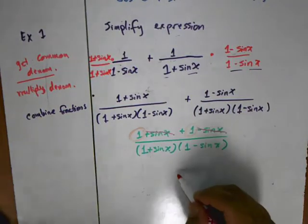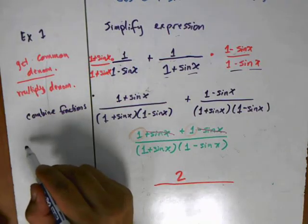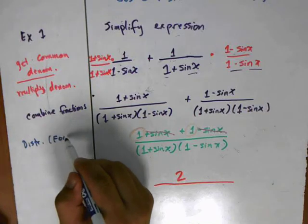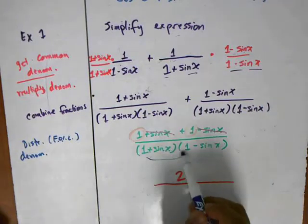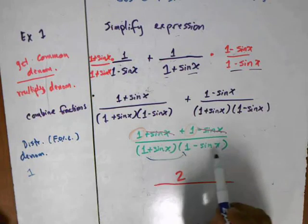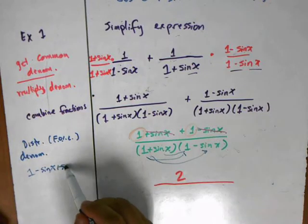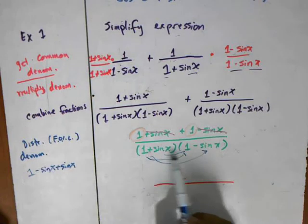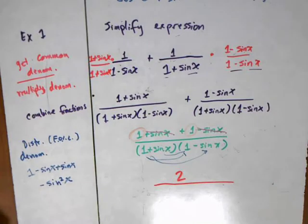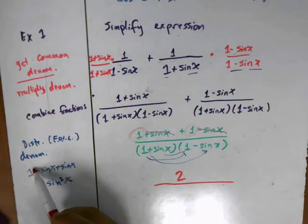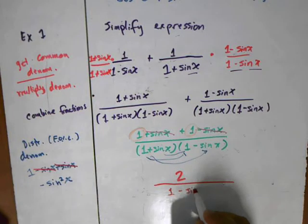Now let's deal with the denominator, and what we're going to do here is just distribute or foil the denominator. First terms: 1 times 1 gives me 1. The outer terms: 1 times negative sine gives me negative sine x. The inner terms: sine times 1 gives me positive sine x. And then finally sine times negative sine gives me negative sine squared x. You can see here as well some of these terms will cancel - you have a minus sine and a plus sine so those will go away. So now we end up with 1 minus sine squared x.